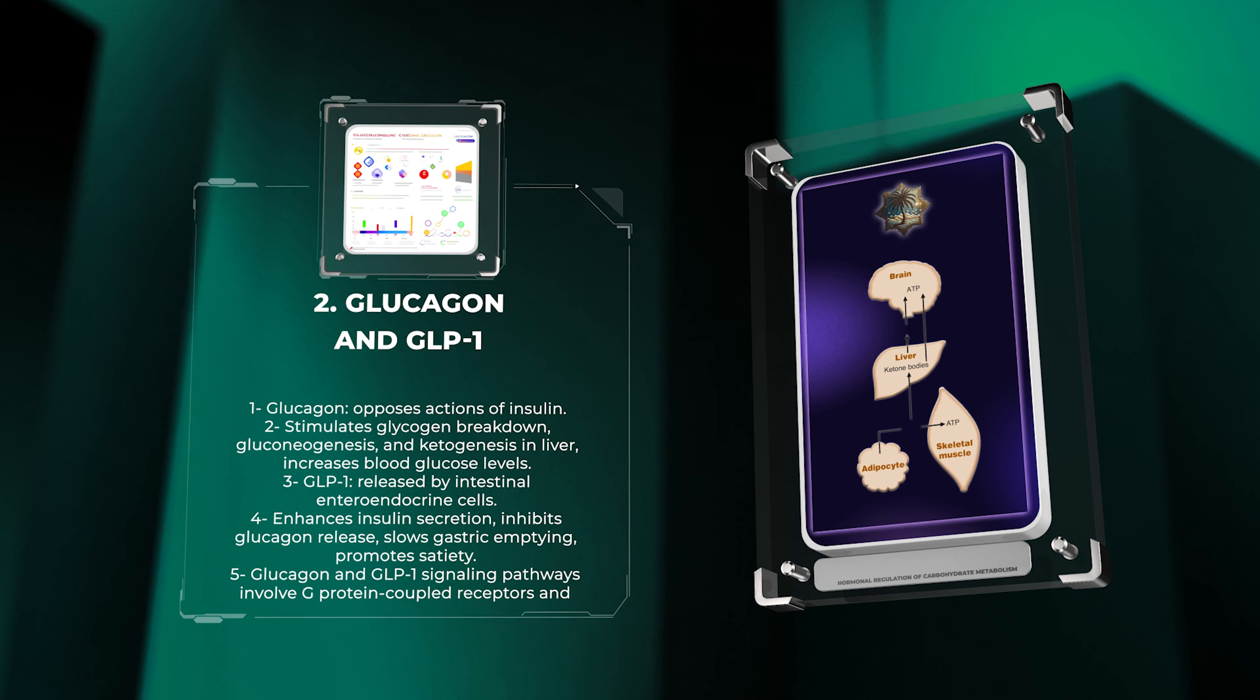Growth hormone (GH), produced by the anterior pituitary gland, regulates growth, metabolism, and cellular processes. GH acts through its receptor to activate Janus kinase (JAK) signal transducer and activator of transcription (STAT) pathway.